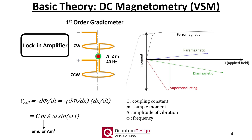Here are several schematic examples of the DC magnetic moment as a function of applied magnetic field. For a DC measurement, we are only measuring the magnitude of the moment vector at a particular temperature and applied magnetic field. While we can measure while sweeping the applied field, we are generally not sensitive to any time-dependent phenomena for most samples, as our magnetic field ramp rates are typically quite slow.